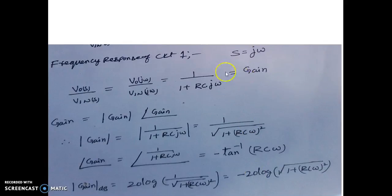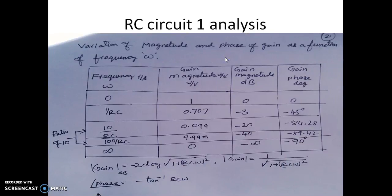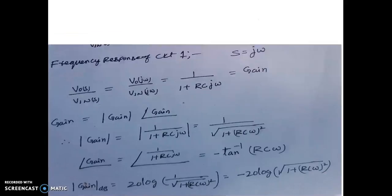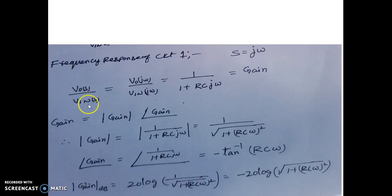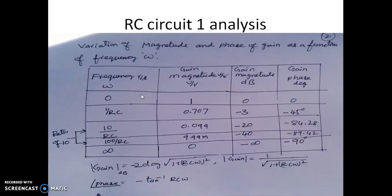Now let us try to find the frequency response of circuit 1. We have to replace S by jω. Replacing S by jω, we write V_out(jω) / VIN(jω) instead of V_out(S) / VIN(S).